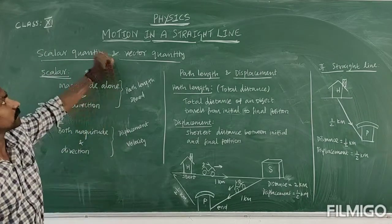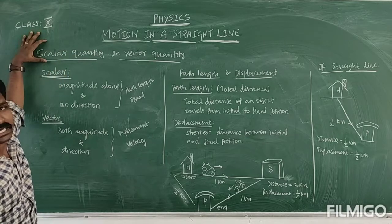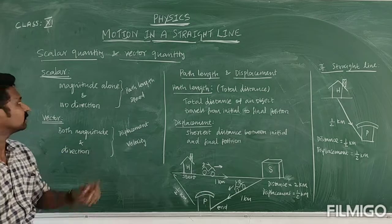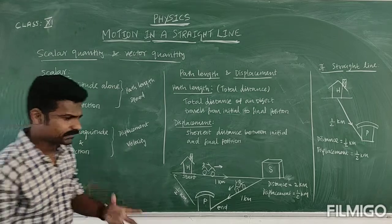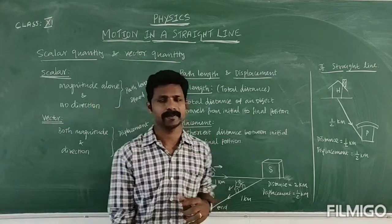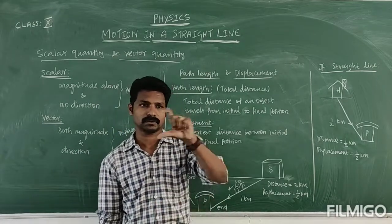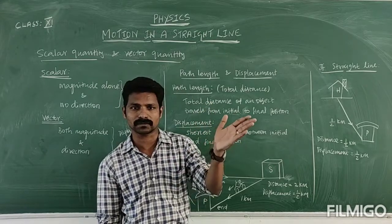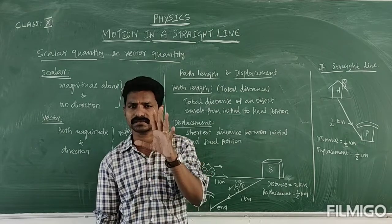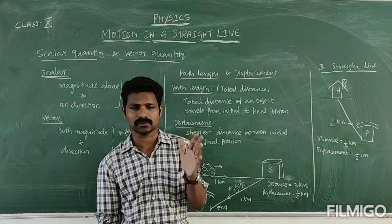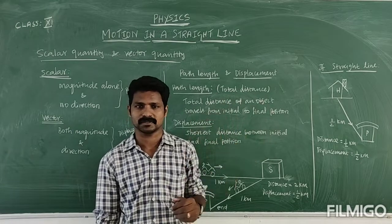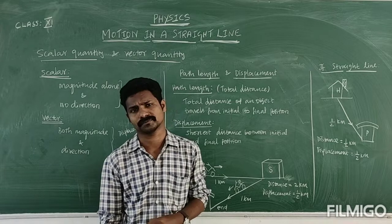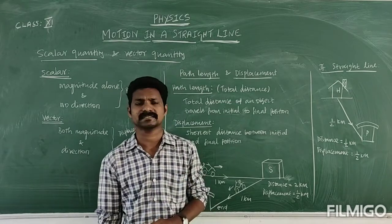In the study of motion, the very first topic is scalar quantity and vector quantity. For example, if a bus travels at 50 km per hour, that is known as speed. But if the bus travels 50 km per hour in the north direction, that is known as a vector quantity, because in the first case I mentioned only the magnitude without any direction.